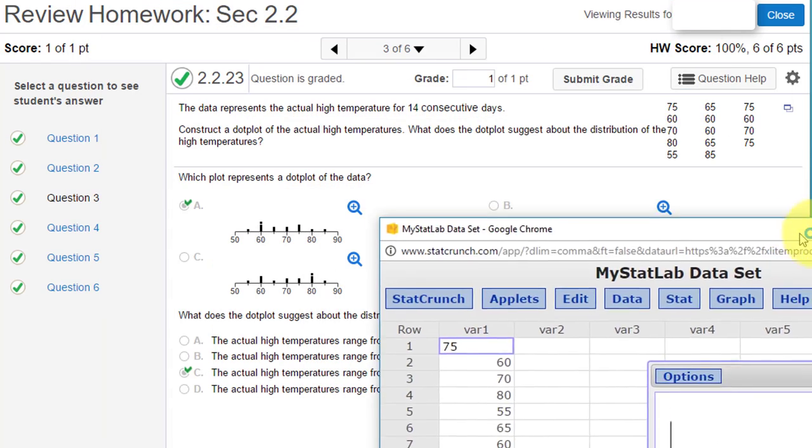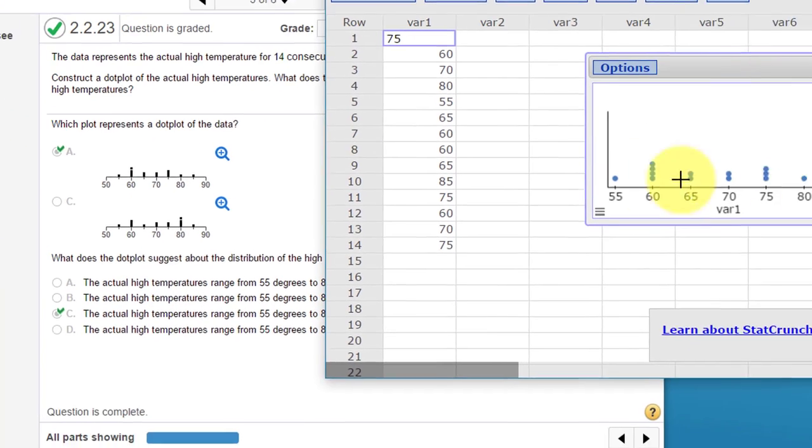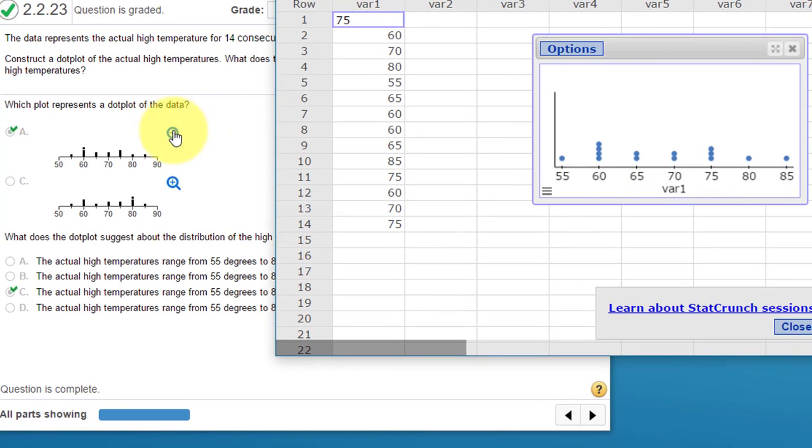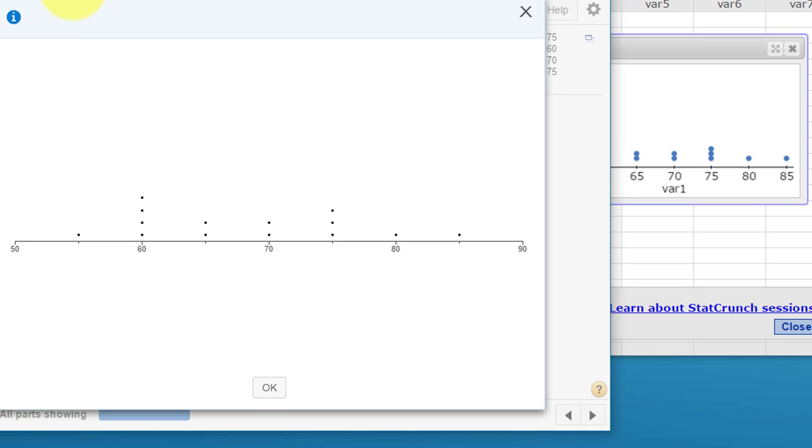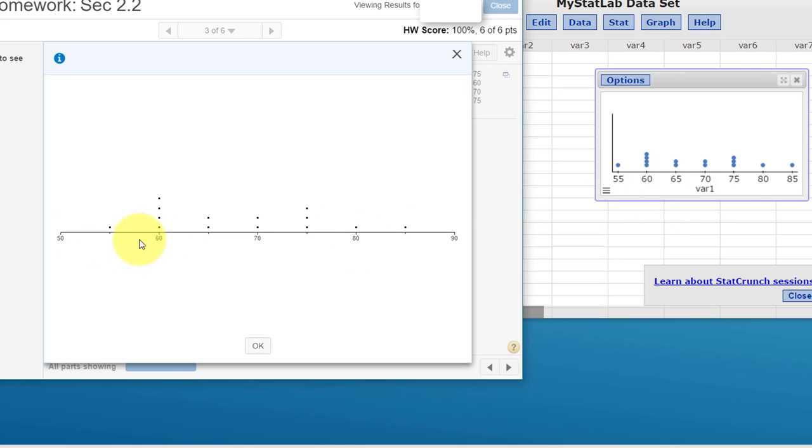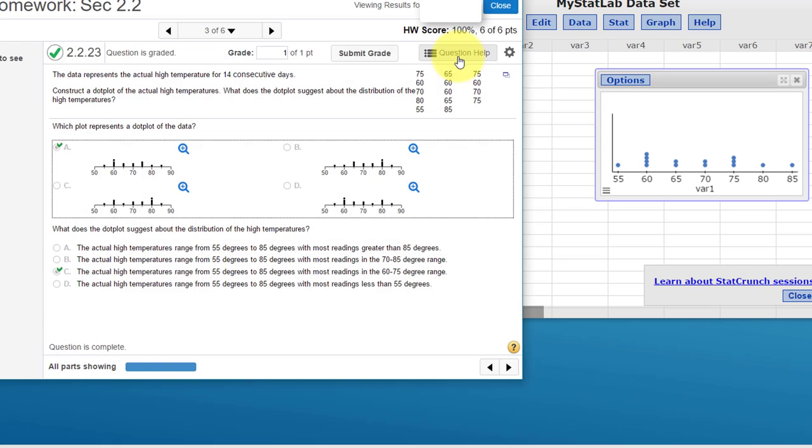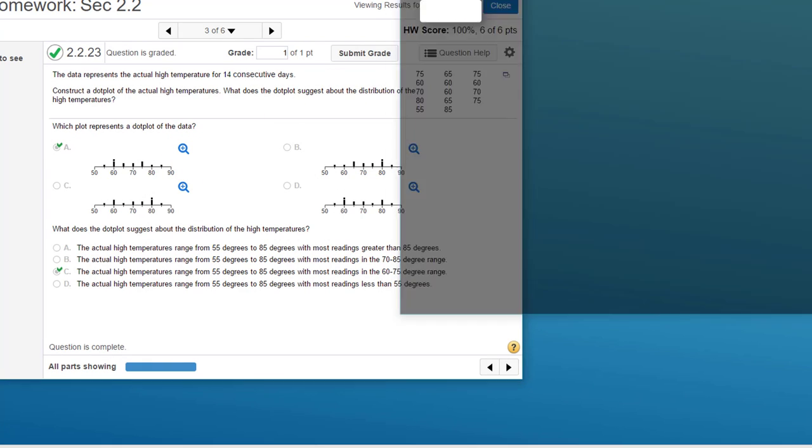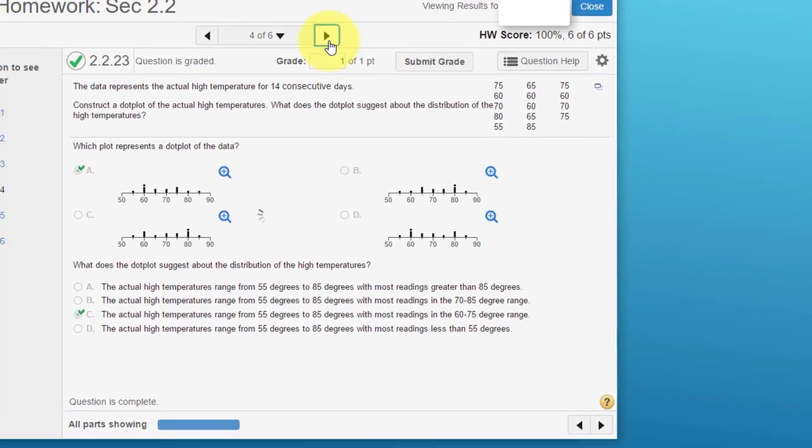There's our dot plot. Let's blow them up so we can see better and compare these two dot plots. Yeah, our dot plot at 55, 60 matches that one. So I would say that is the right answer. That's how fast you can answer that question. Let's go on to the next problem.